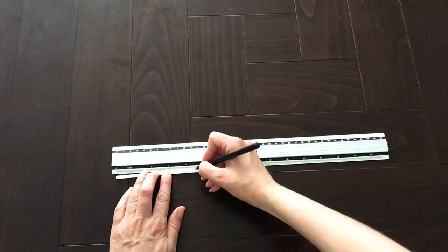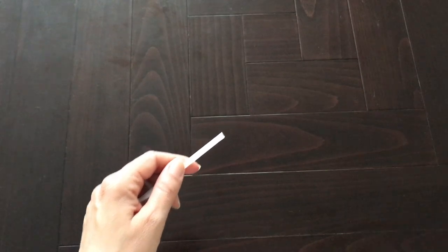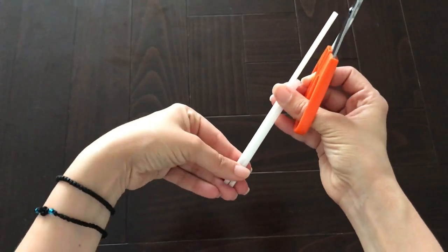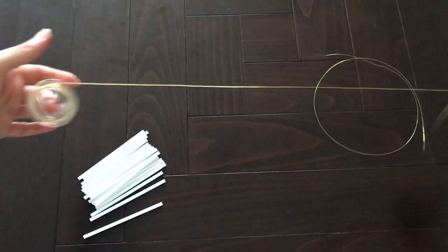Start by measuring and marking your straw at 4.5 inches and then cut the straws using the first one as a guide. This is a little time-consuming but it's a fun process too, guys.